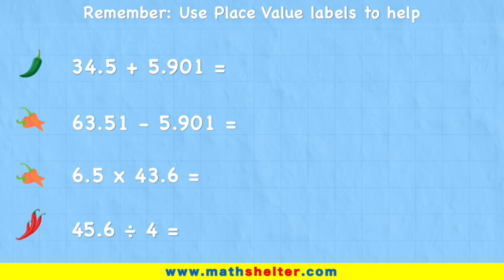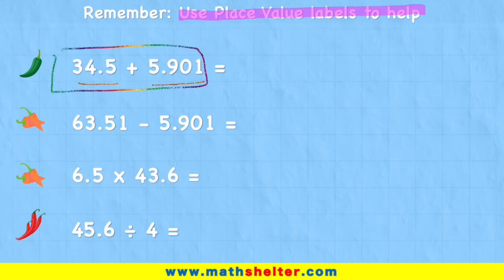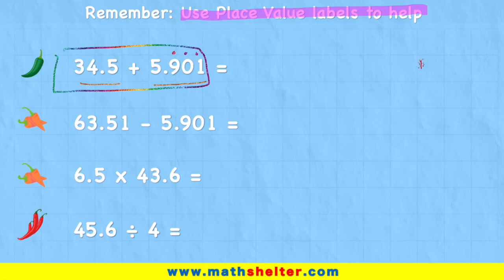Let's start with the addition question. We have 34.5 added to 5.901. What we're going to need to remember today is to use our place value chart to help us so we don't make any small mistakes. So with that in mind, let's have a look at our numbers and decide what titles we're going to have to include. I can see that we've got tenths, hundredths and thousandths in this second number.